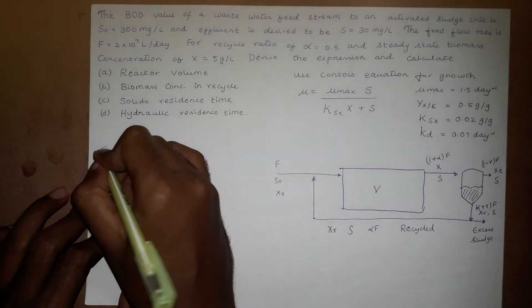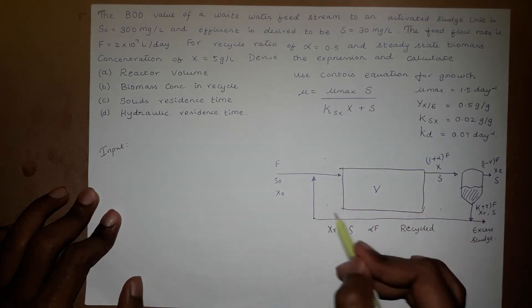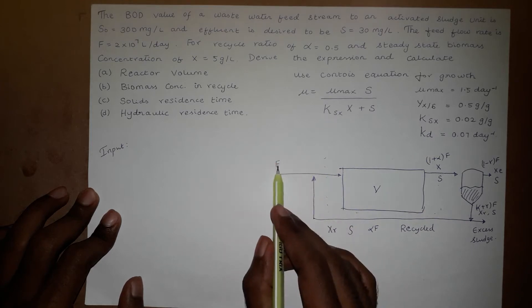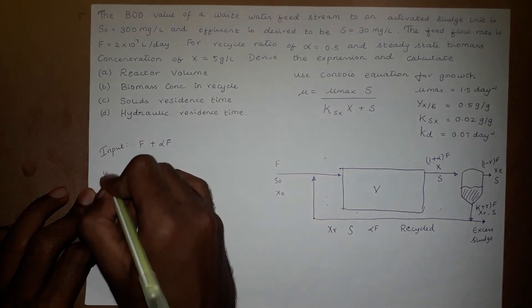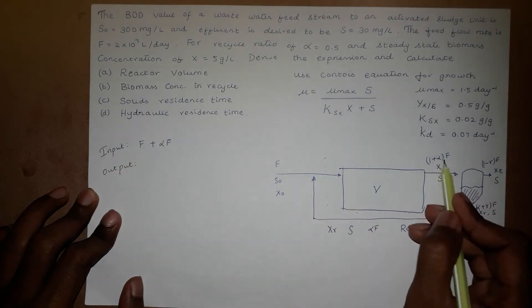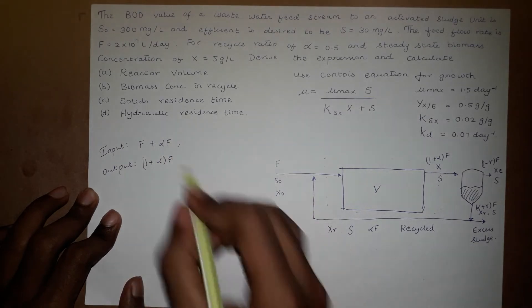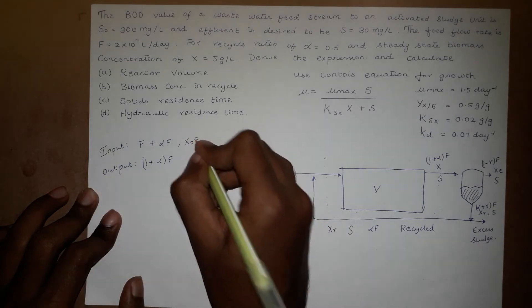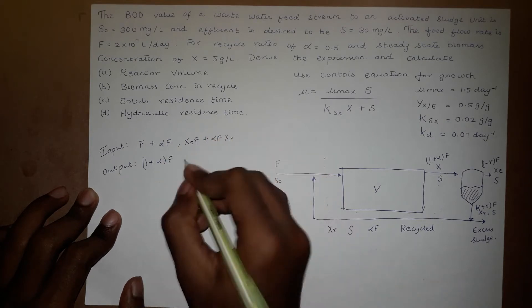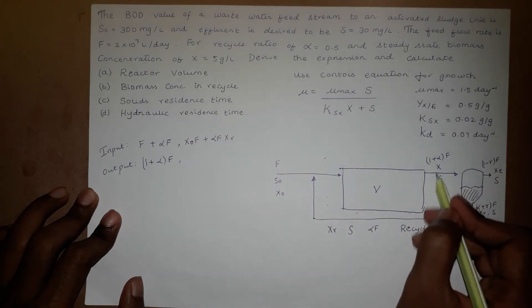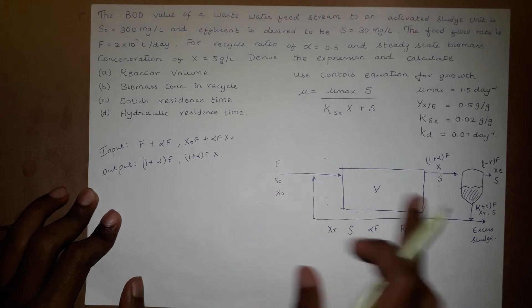The input to the reactor is F plus alpha·F. The input carries substrate concentration S0 and biomass: F·X0 from the feed plus alpha·F·XR from the recycle stream. The output has flow rate (1 + alpha)·F with steady-state biomass concentration X. Similarly, substrate enters as S0 and exits as S.